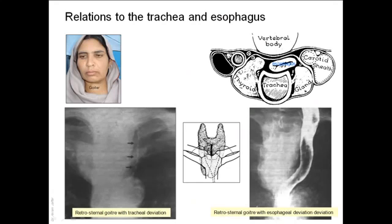Because of the close proximity of the thyroid gland to the trachea and esophagus, enlargement of the thyroid gland — called goiter — can compress either or both structures. Compression of the trachea can result in dyspnea, and compression of the esophagus can result in dysphagia, or difficulty swallowing. When the thyroid gland is so large that it extends into the superior mediastinum, this is called a retrosternal goiter, and it can push the trachea to the side.